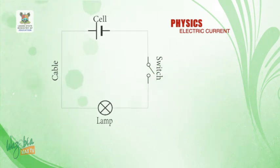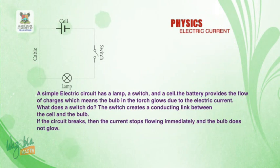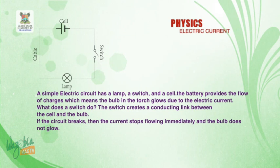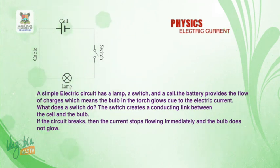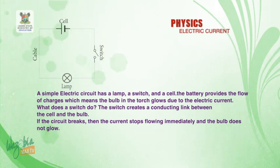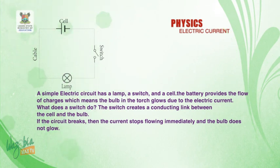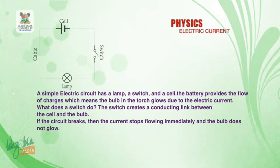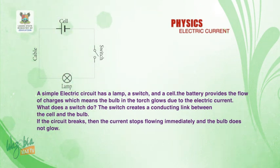Let's look at a simple electric circuit. In a simple electric circuit, we have the cable, the conducting wire, the cell, the switch, and the lamp. The cell, which is the battery, provides a charge that flows around the circuit. When the switch is closed, the lamp glows — it comes on. But when the switch is open, there is a break in the circuit and the lamp will not glow. So the switch is what closes or opens the circuit.